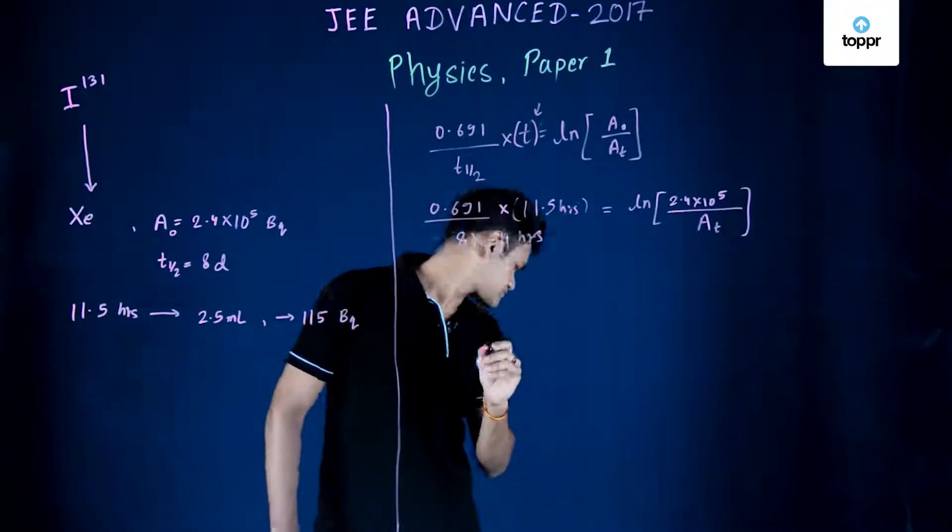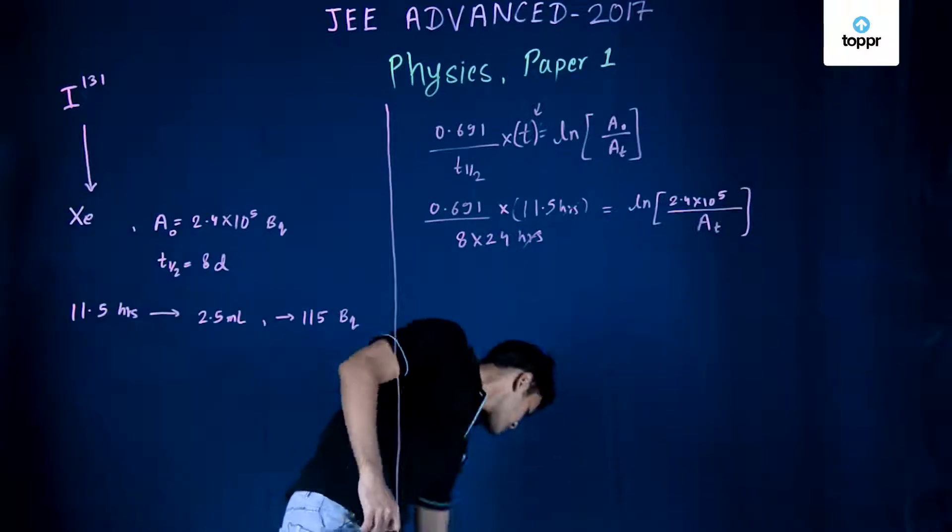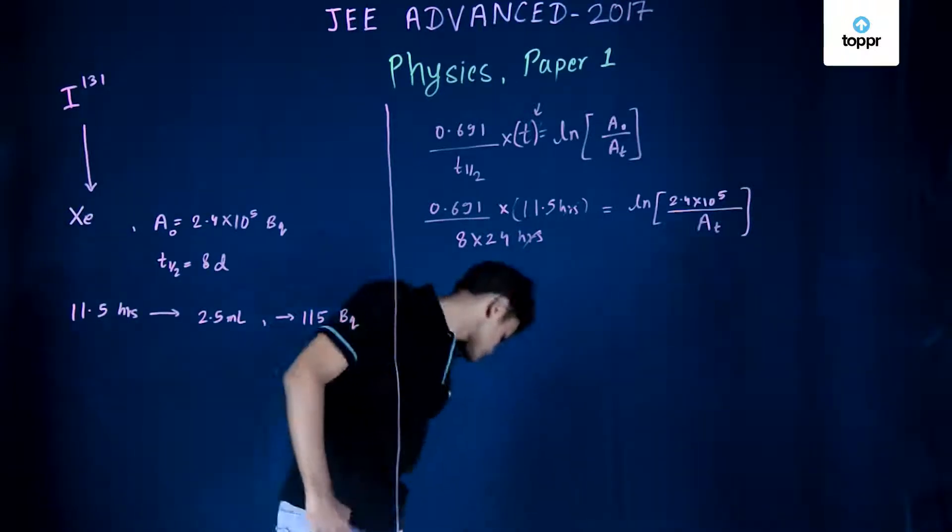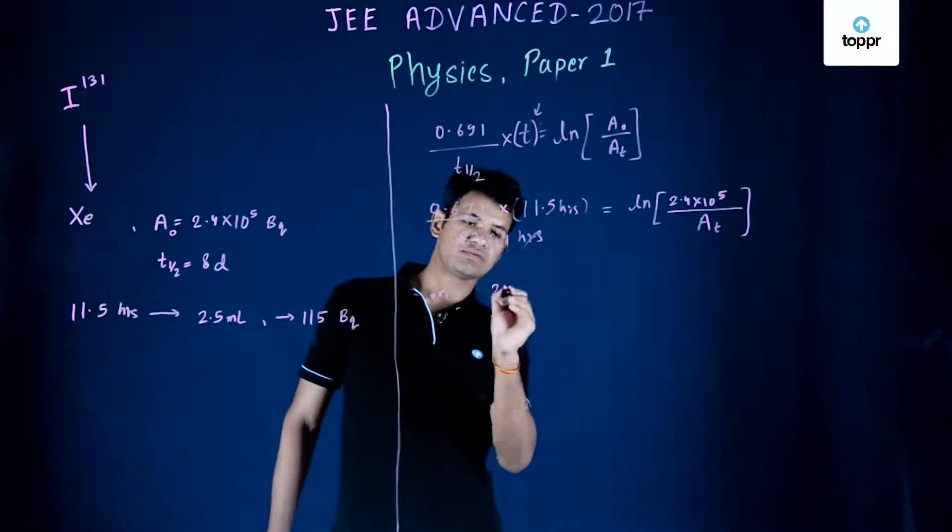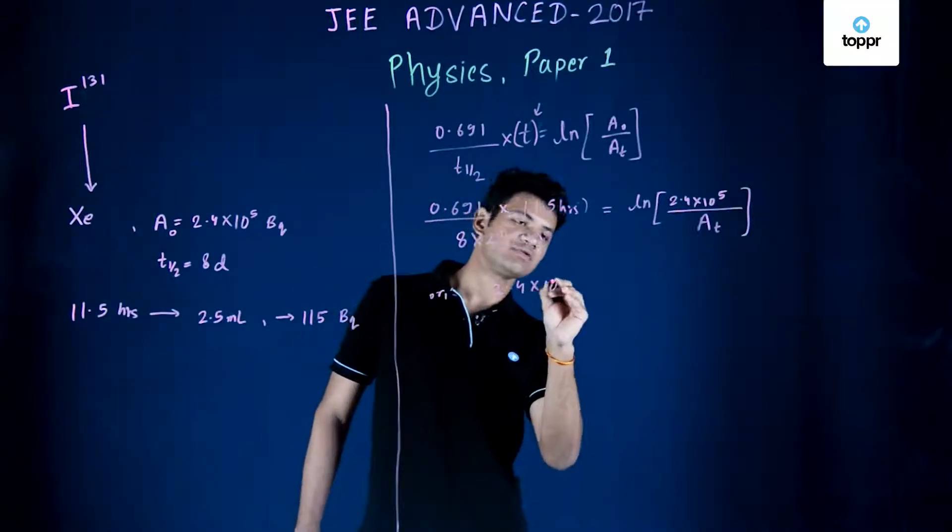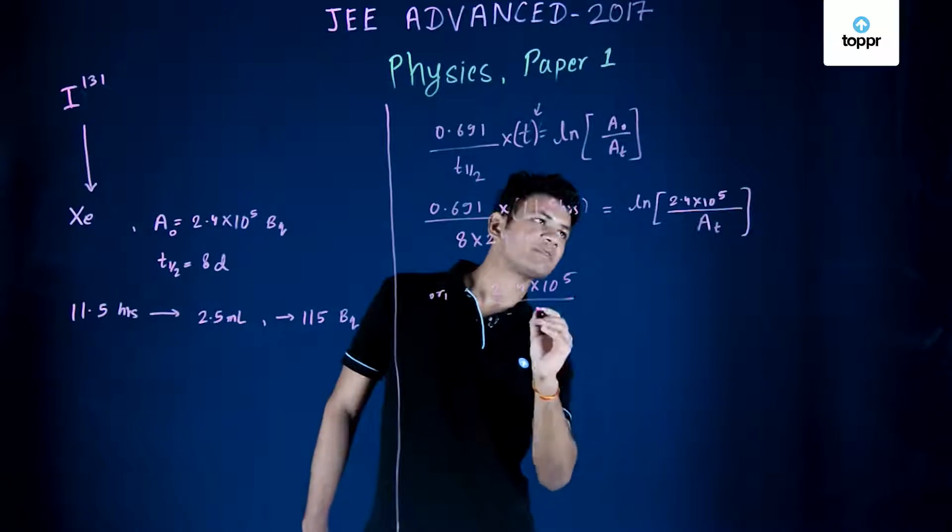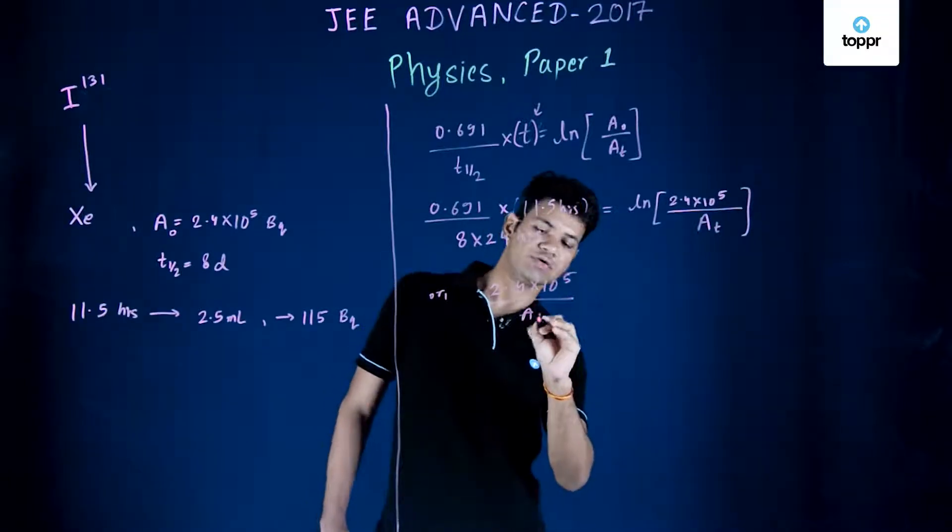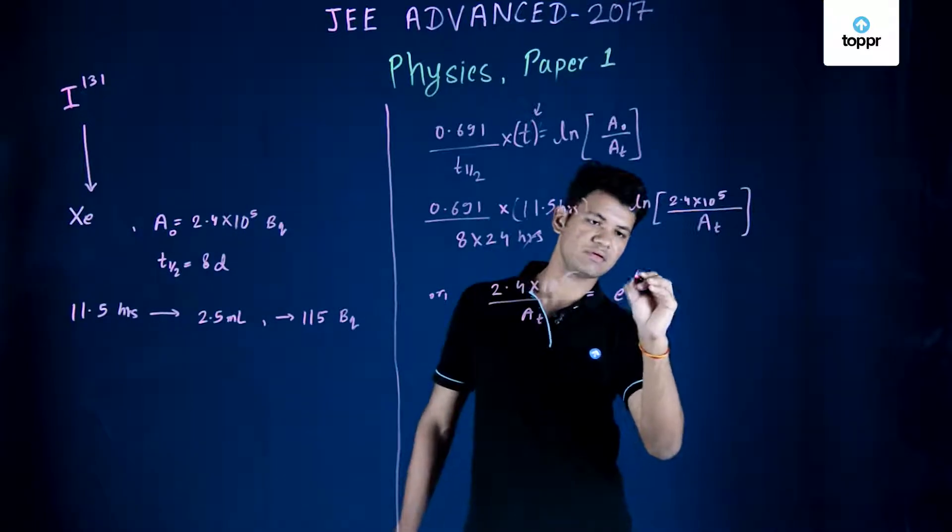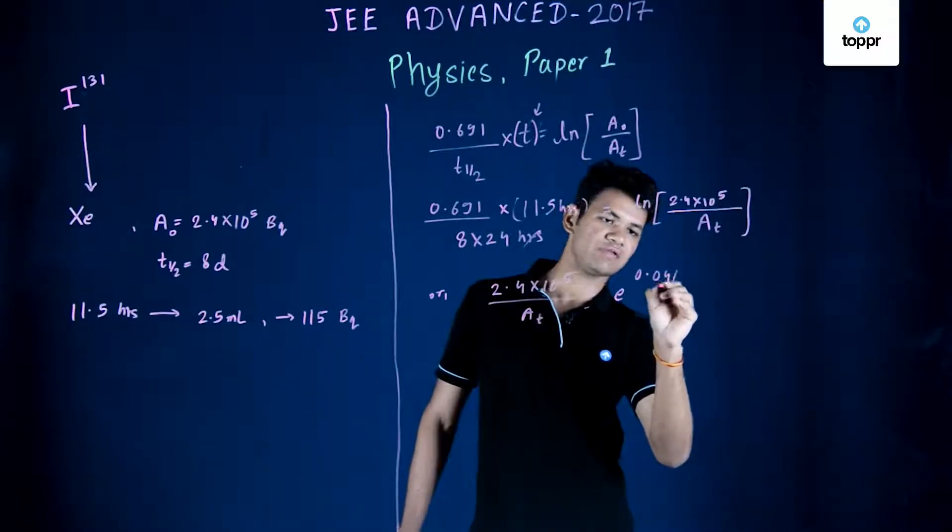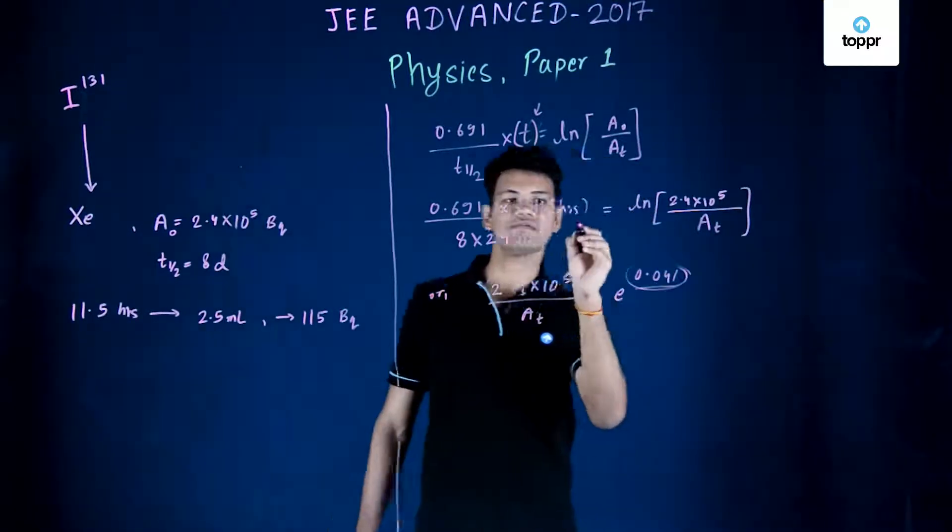Now after simplifying it we get 2.4 × 10^5 upon A_t e^0.041. This is basically the value of this.